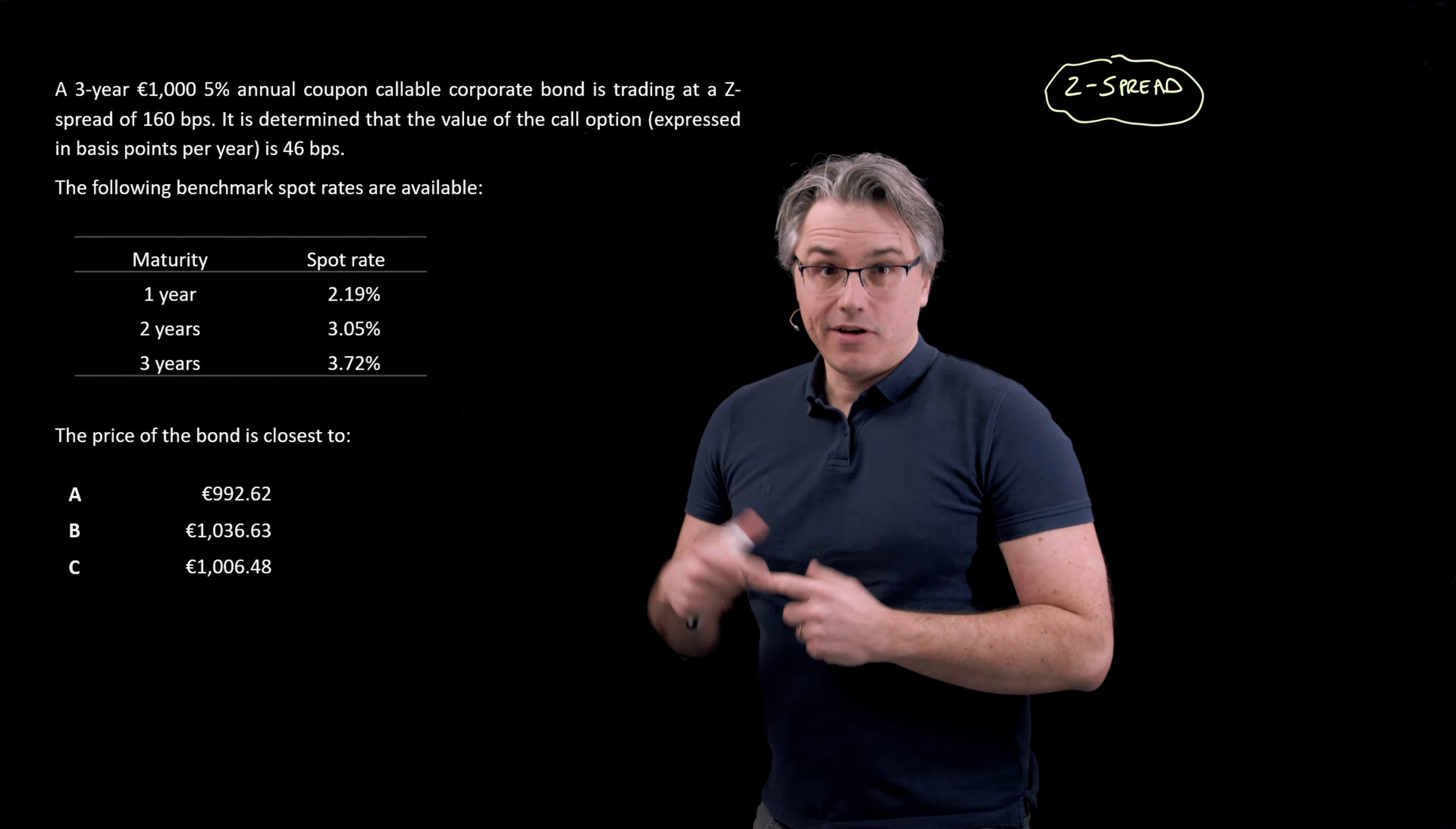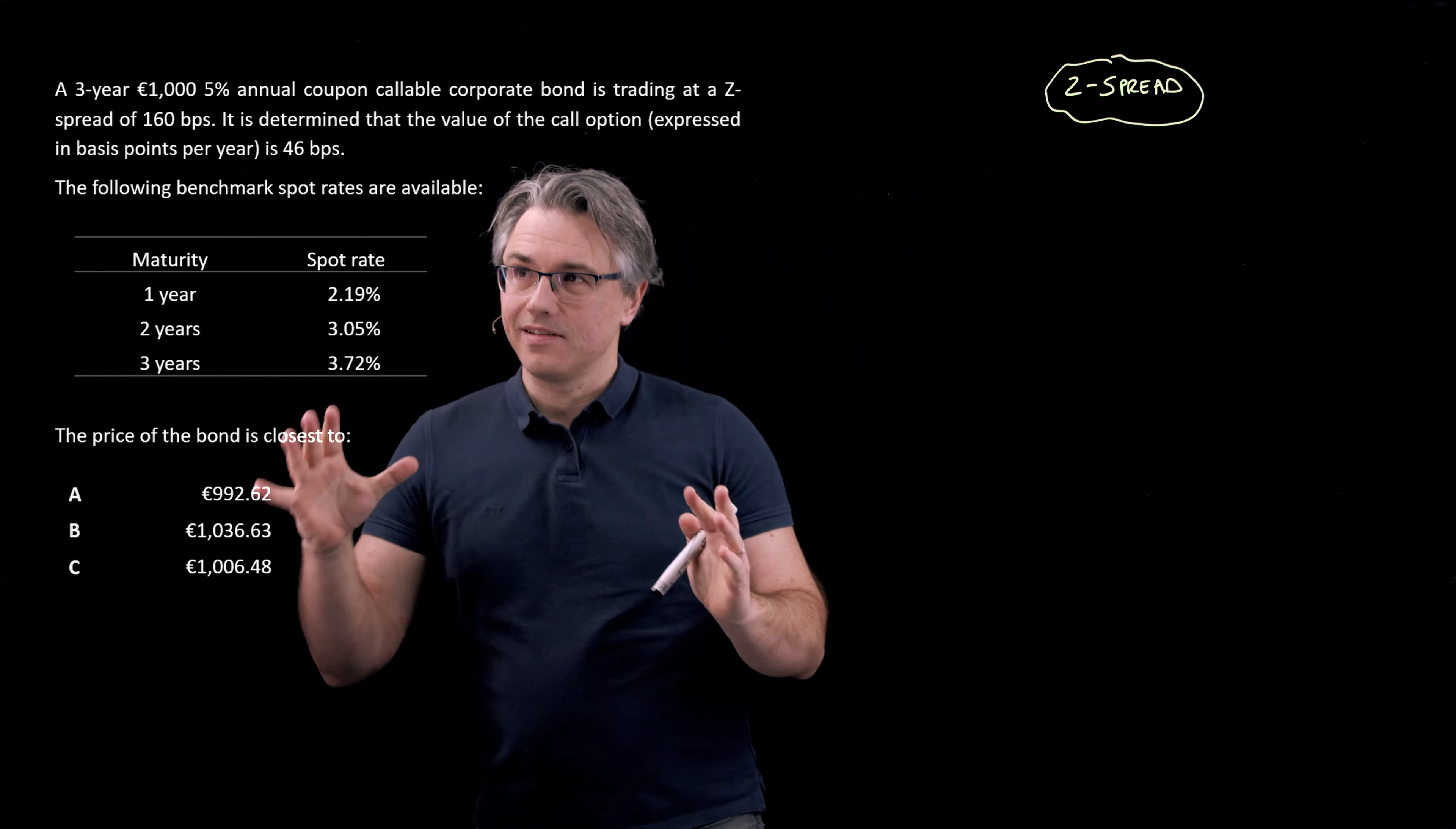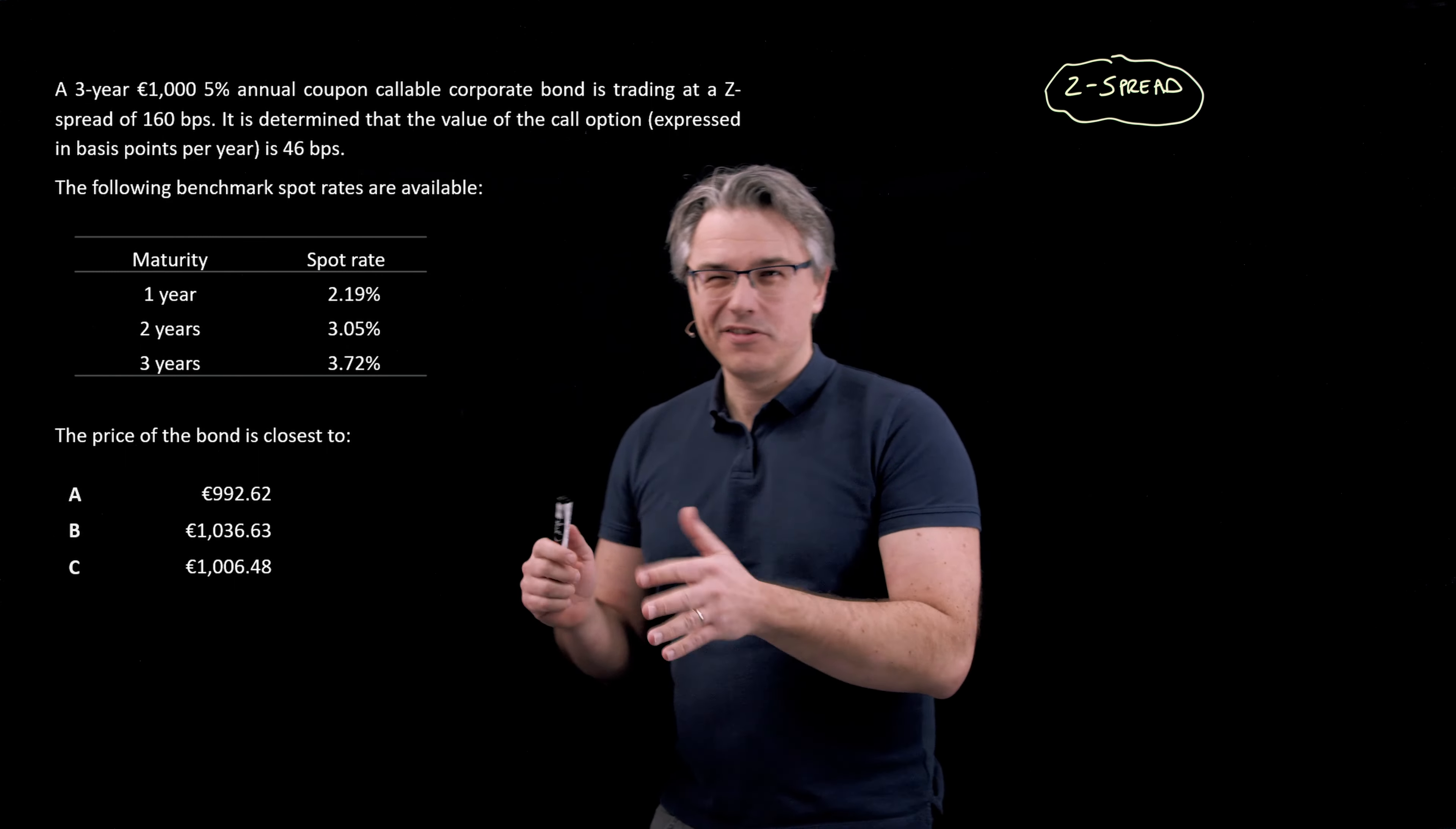This is the question which I want us to go through. A three-year, 1,000 euro 5% annual coupon callable corporate bond is trading at a Z-spread of 160 basis points. It is determined that the value of the call option expressed in basis points per year is 46 basis points. I'm not really going to utilize the information from that second sentence yet. There will be a follow-on question after this one which will get us to think in terms of the call option value. For now, I'm going to ignore that parameter.